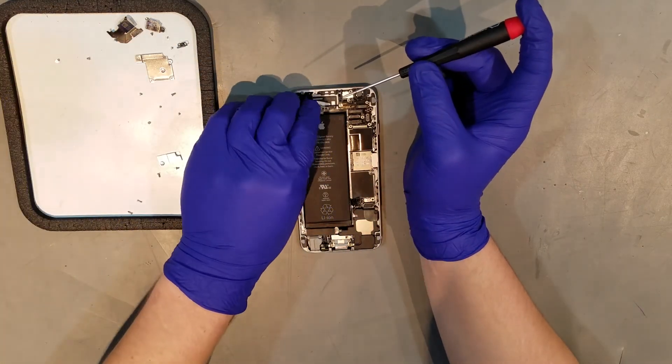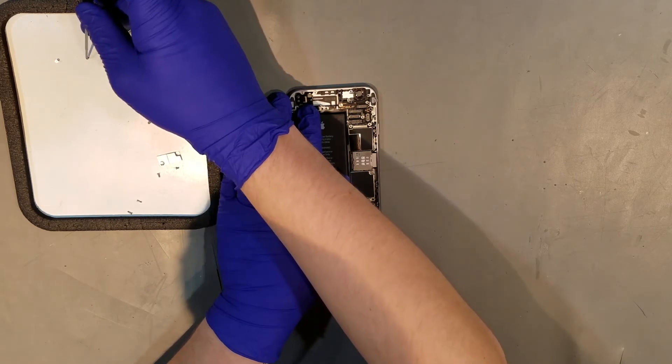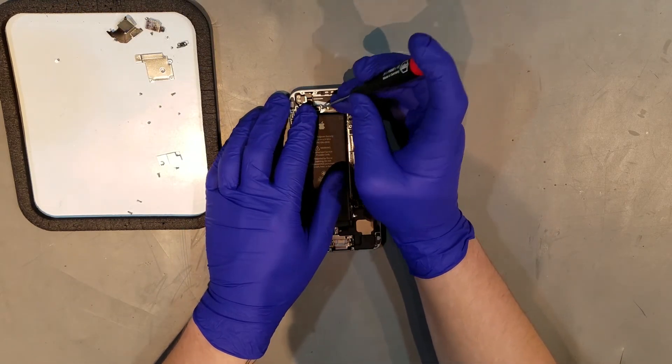Once all of those screws are replaced, the plate that covers the volume and power clips can be laid back in and the two screws that secure it in can be replaced as well.